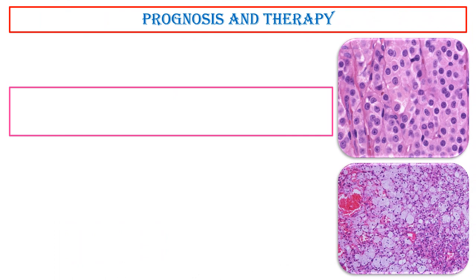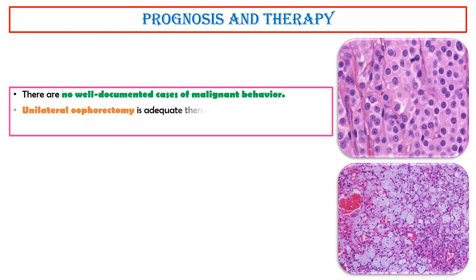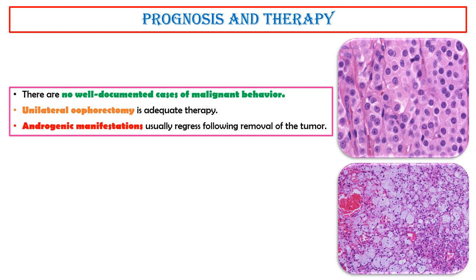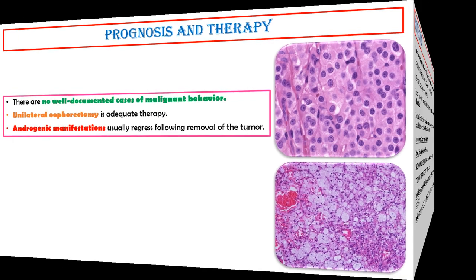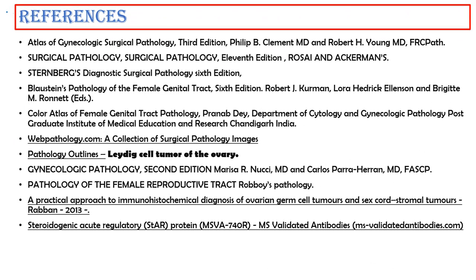Prognosis and therapy. There are no well-documented cases of malignant behavior. Unilateral oophorectomy is adequate therapy. Androgenic manifestations usually regress following removal of the tumor. These are the references.